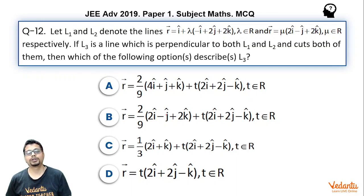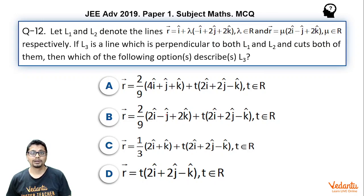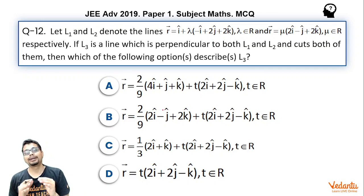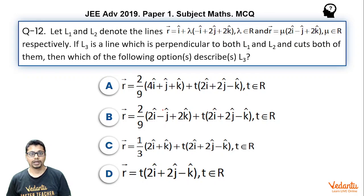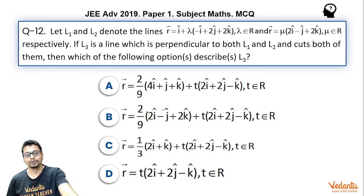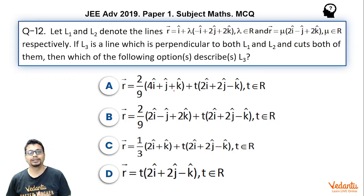Now first consider how these two lines L1 and L2 are situated with respect to each other. If they are parallel lines, then line L3 would be a set of parallel lines — parallel to a vector parallel to the plane containing L1 and L2 and normal to these two lines. If L1 and L2 are intersecting lines, then line L3 would be along the shortest distance between these two lines.